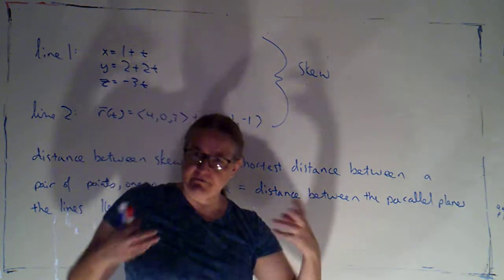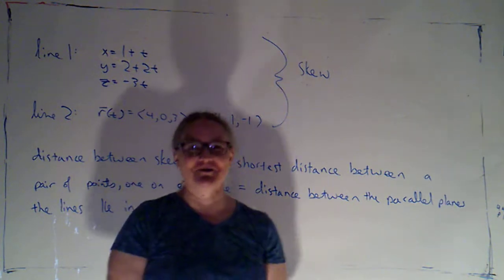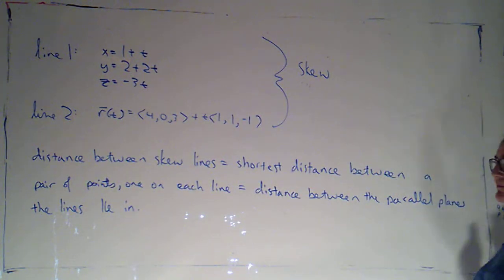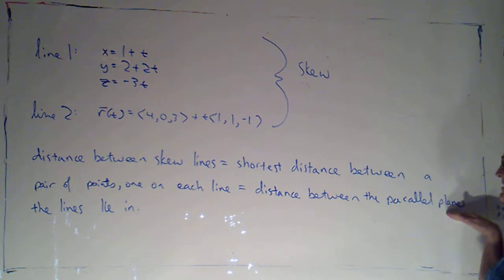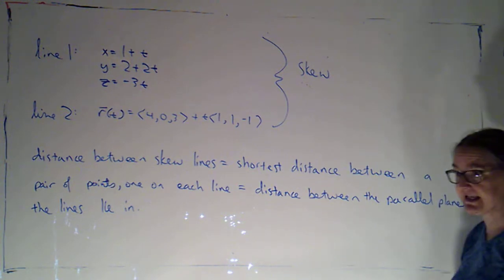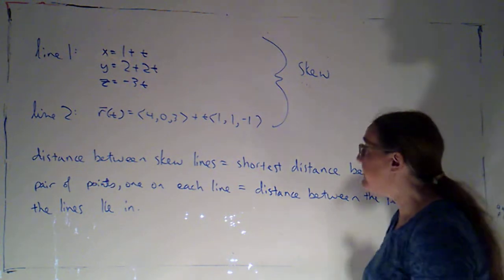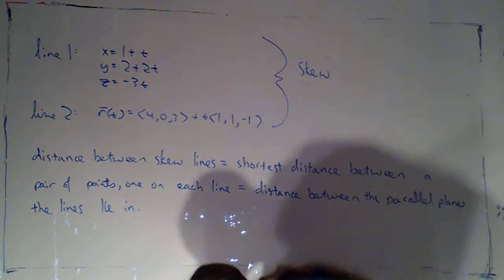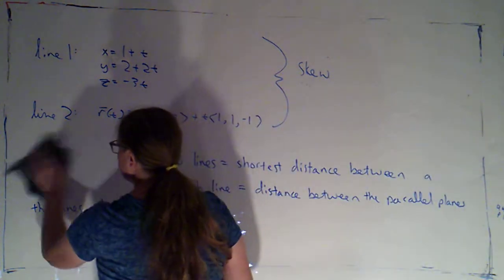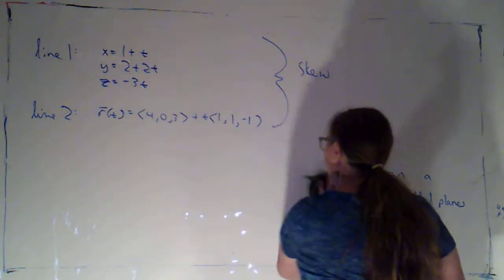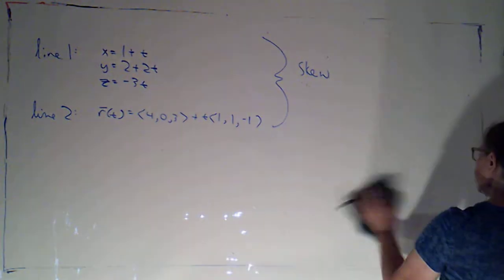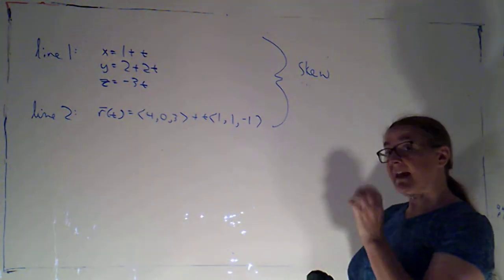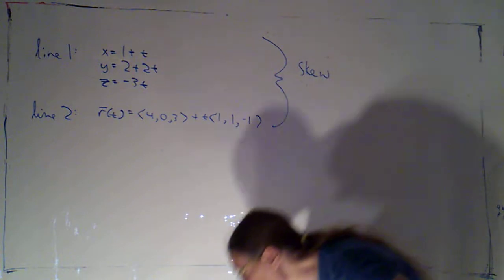That sounds like a big task, because I'd have to find the closest points. There's a nifty shortcut, because it turns out that's the distance between the parallel planes that these lines lie in. When we discussed skew lines, we stated that they would always lie in parallel planes, and we're going to take advantage of that here.